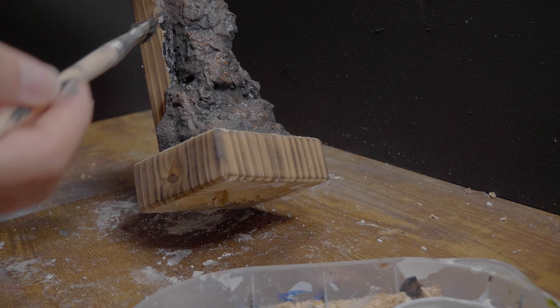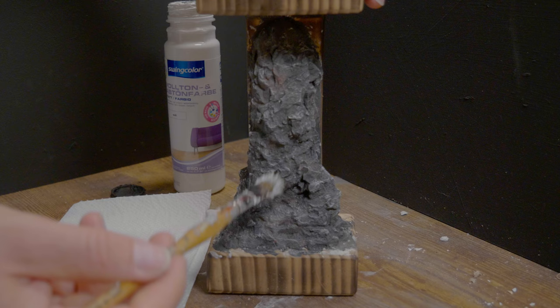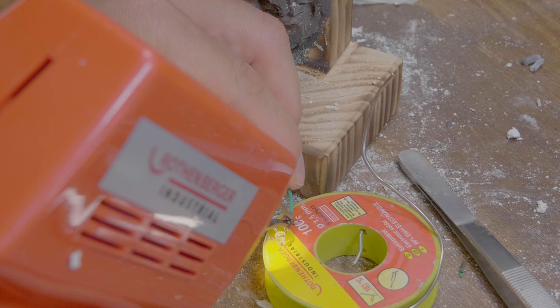Once the primer is dry it's time to dry brush. I use an old brush and some white paint. The brush is dabbed on a paper towel until hardly any paint sticks in it and then lightly brush from top to bottom over the primer. Elevations and edges are also easily highlighted.